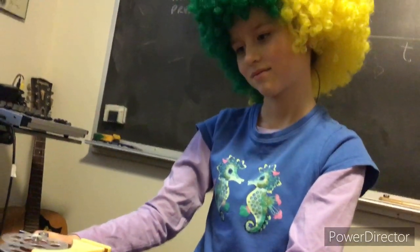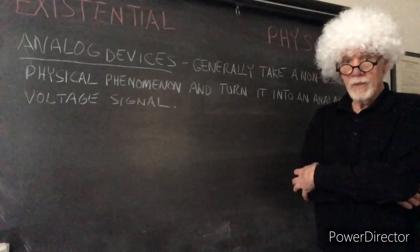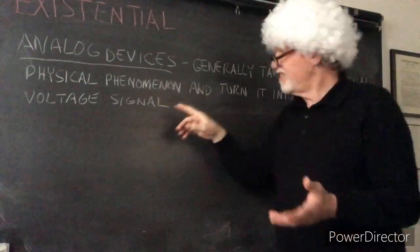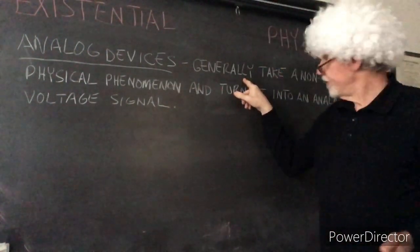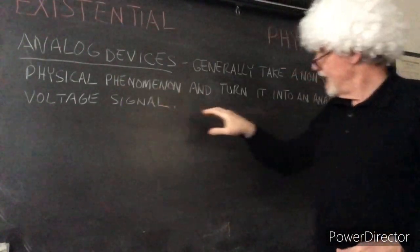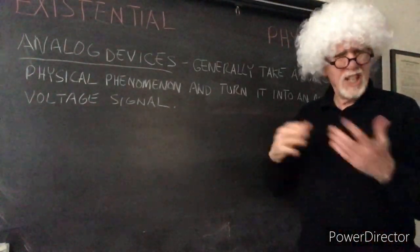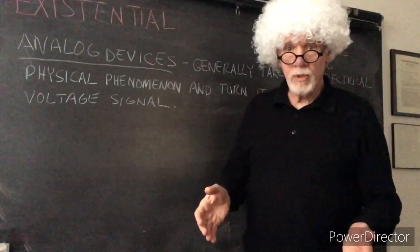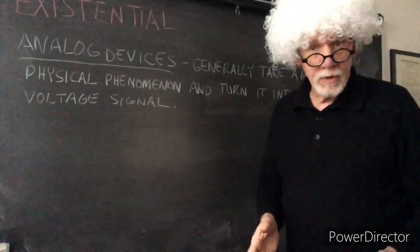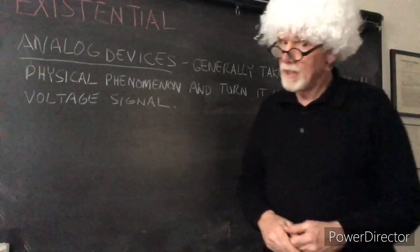At the beginning of this video I gave you a general definition of what an analog device is. I said generally analog devices take a non-electrical physical event or physical phenomenon and turn it into an analogous voltage signal. Well that's generally speaking, because as you saw with the tape recorder, we could also turn the physical phenomenon into a magnetic field. So not all analog devices are electrical.